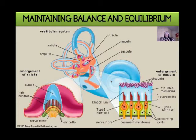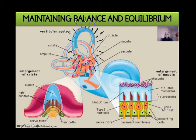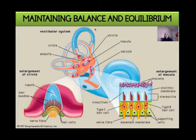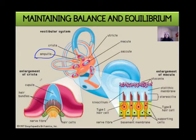Let's look at our structure. Here are our three semicircular canals found within our vestibule. At the base of our semicircular canals — at the bottom — we find a swelling called the ampulla. Let's enlarge it to see what lies within.